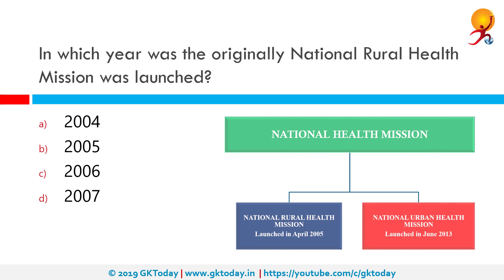In which year was the National Rural Health Mission launched originally? The correct answer is 2005. It was launched on 5th April 2005 by the then Indian Prime Minister Dr. Manmohan Singh, and it was initially tasked with addressing the health needs of 18 states that had been identified as having weak public health indicators.